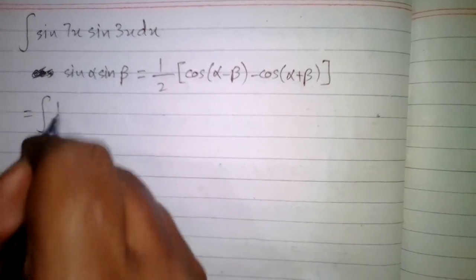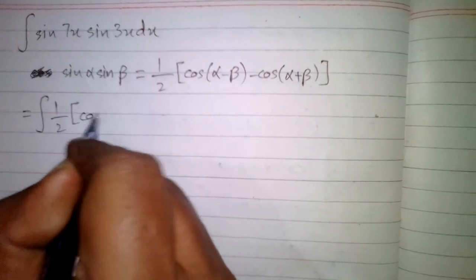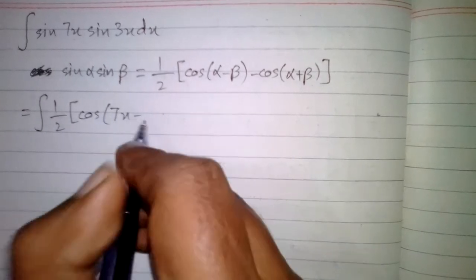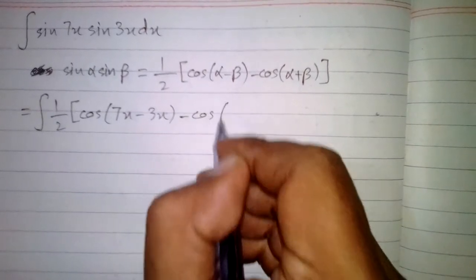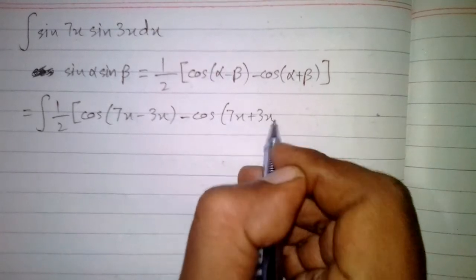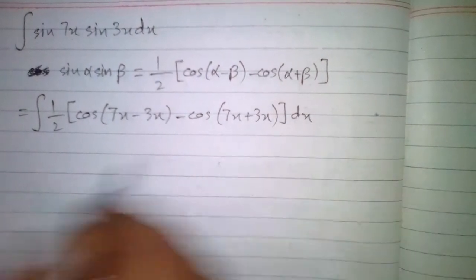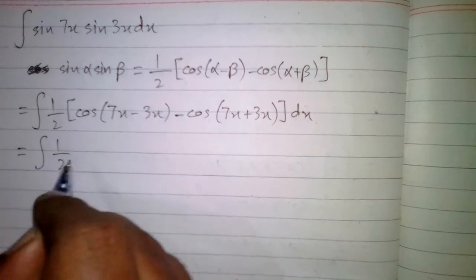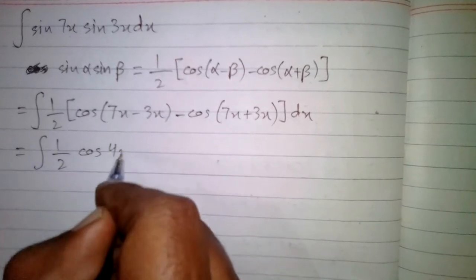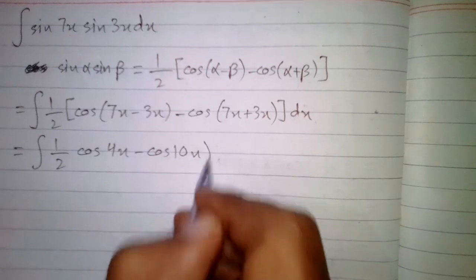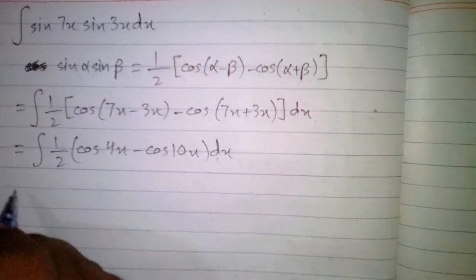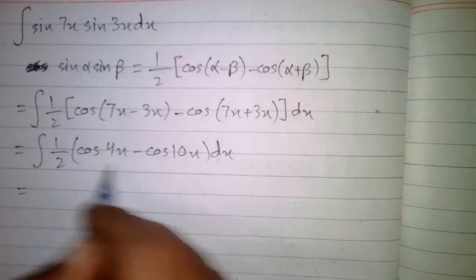Applying the formula, we have the integral of ½[cos(7x - 3x) - cos(7x + 3x)] dx. After simplifying, we have ½ of [cos(4x) - cos(10x)] dx.